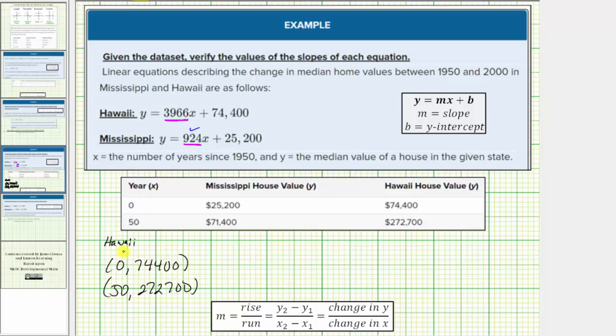We'll go ahead and label the ordered pairs and use the slope formula. So the slope m is equal to y sub 2 minus y sub 1, which is 272,700 minus 74,400, divided by x sub 2 minus x sub 1, which is 50 minus 0. This is equal to 198,300 divided by 50, which does equal 3966, verifying the slope for the equation involving Hawaii.